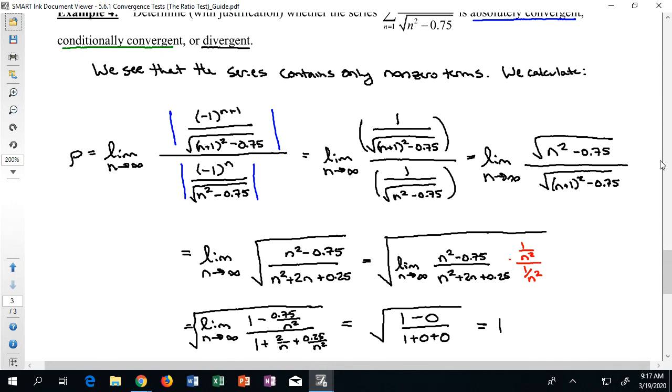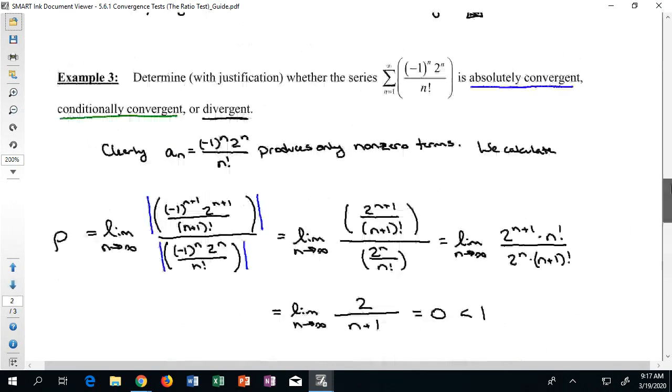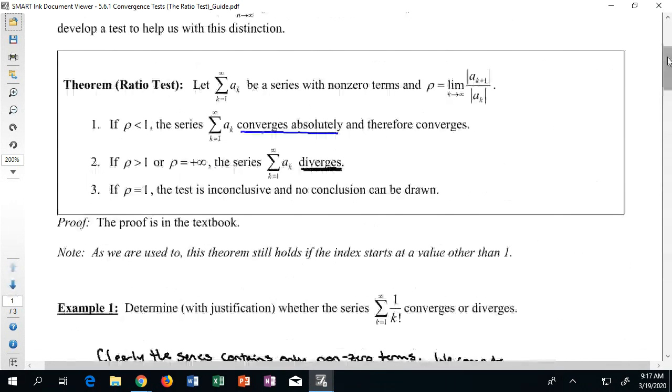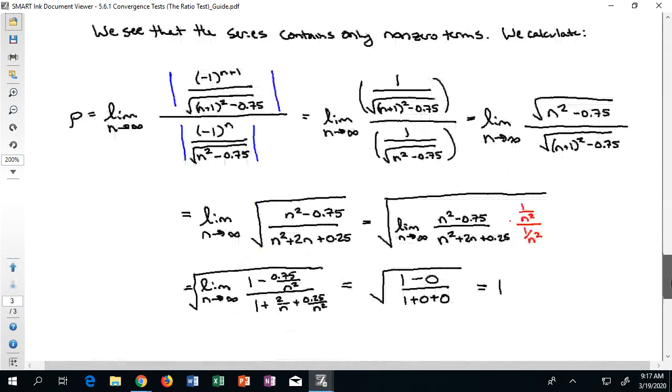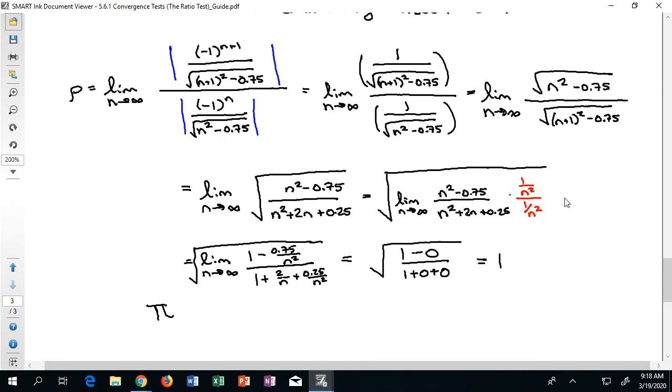You may notice that something very devastating has happened to us here. If I scroll back and look at what the ratio test actually says: oh no. If you get 1, the test is inconclusive. You cannot draw any conclusion. Essentially what that means is we just wasted a bunch of time. That sucks.